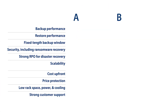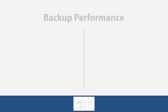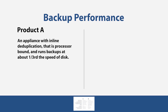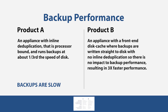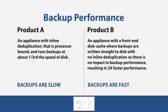To illustrate this, let's take two different backup storage approaches and compare them in the following categories to show the impact. Backup performance: Product A is an appliance with inline deduplication that is processor bound and runs backups at about one-third the speed of disk, so backups are slow. Product B is an appliance with a front-end disk cache where backups are written straight to disk with no inline deduplication, resulting in three times faster performance — backups are fast.